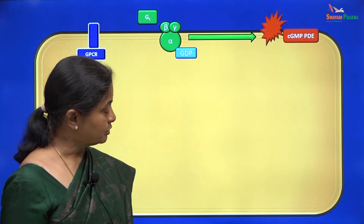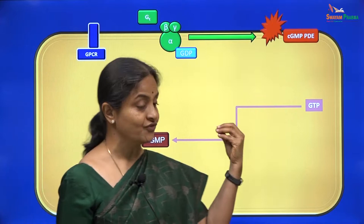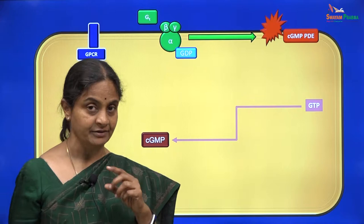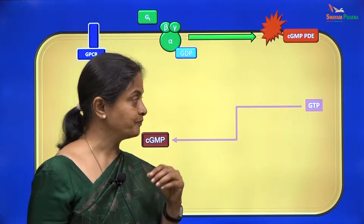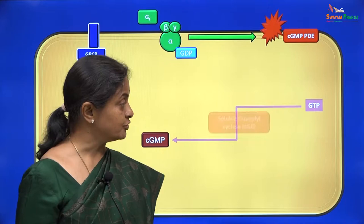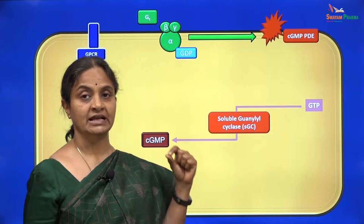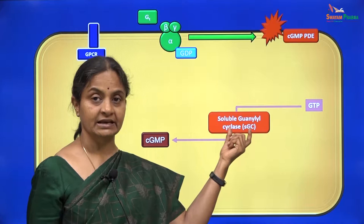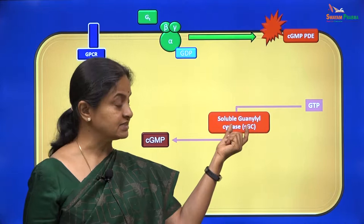Let us first see how cGMP is formed in the cell. Just like cyclic AMP is formed from ATP by the action of adenylyl cyclase — which was the first membrane enzyme we discussed — cyclic GMP comes from GTP, or guanosine triphosphate, under the action of a guanylyl cyclase enzyme. The difference from adenylyl cyclase is that while adenylyl cyclase was a membrane enzyme, this type of guanylyl cyclase is a cytosolic enzyme.